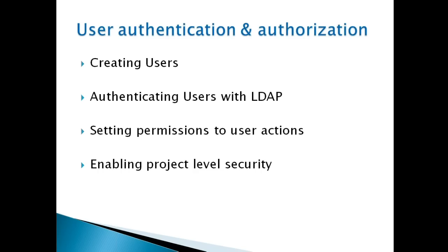Running builds is a development practice; in production you will not do any kind of builds. A build is purely a development practice for generating output of your source code. Authentication is providing access to users, setting permissions for user actions. Hudson also has project-level security, so you can configure which actions are allowed at the project level.